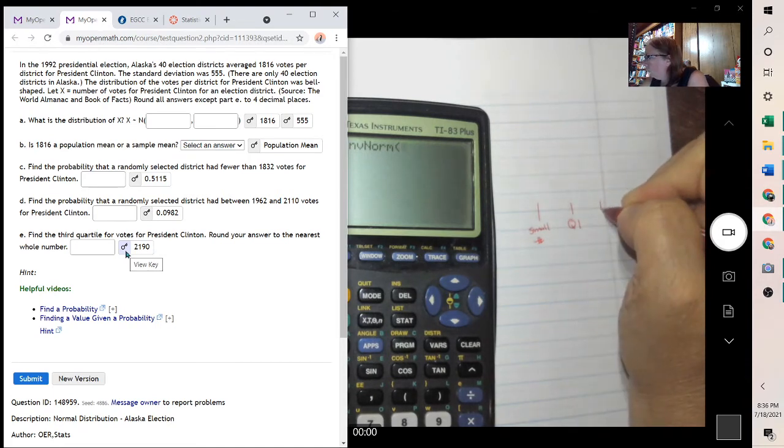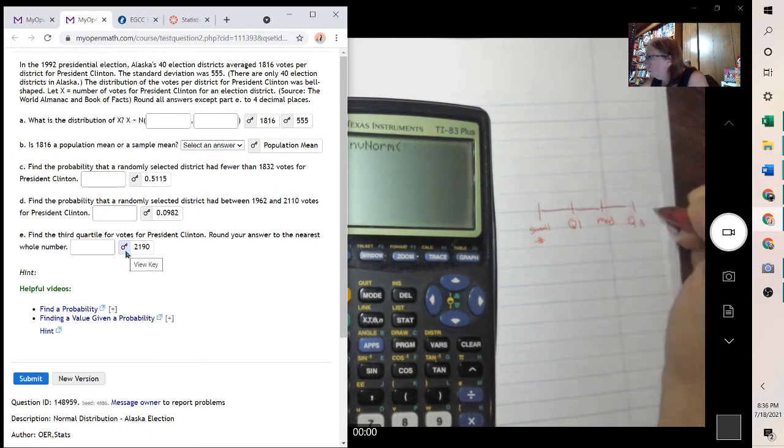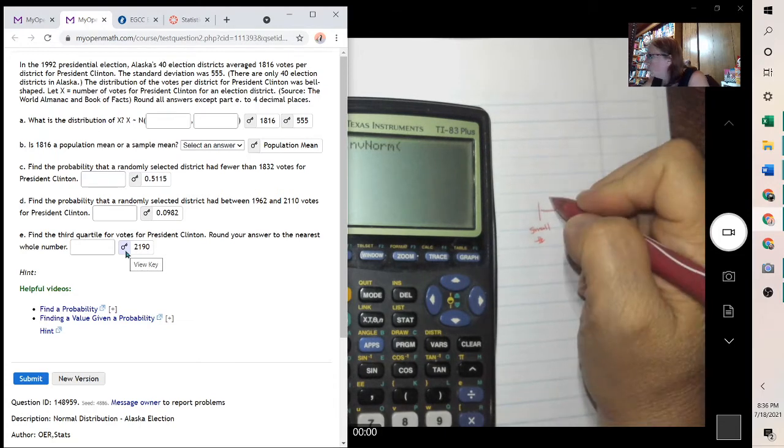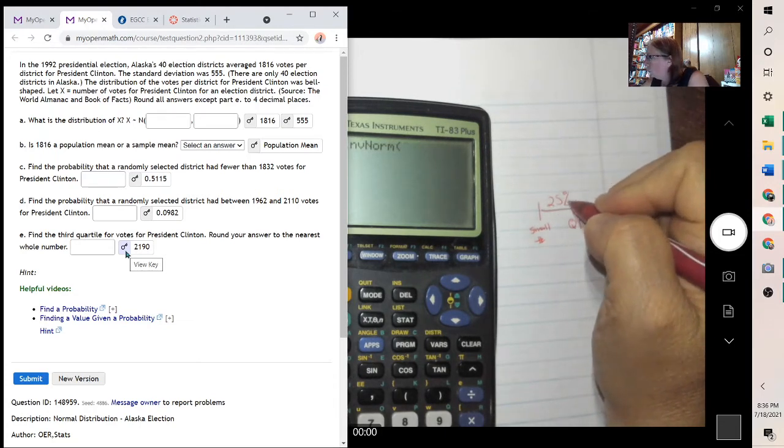So we want to go 0.75, and then your mean and standard deviation, which was 1816 and 555. And that gives us the 2190. It said round to the whole integer, 2190.